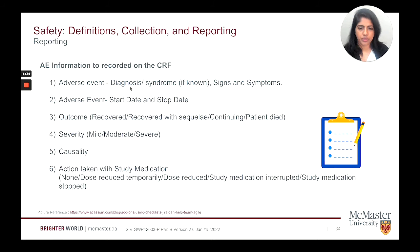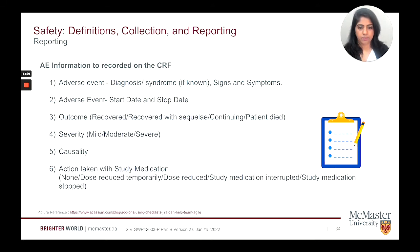What should be recorded? You will record the following information in the AE section of the CRF. For adverse events, diagnosis or syndrome if known, or signs and symptoms must be entered if the diagnosis is unknown at the time of entry. Once the diagnosis or provisional diagnosis is available, it should be updated, sometimes along with symptoms and signs. For example, fever and malaise due to respiratory tract infection.